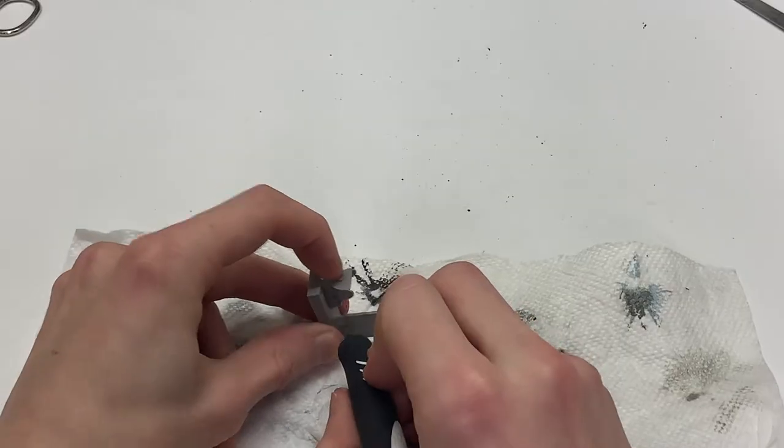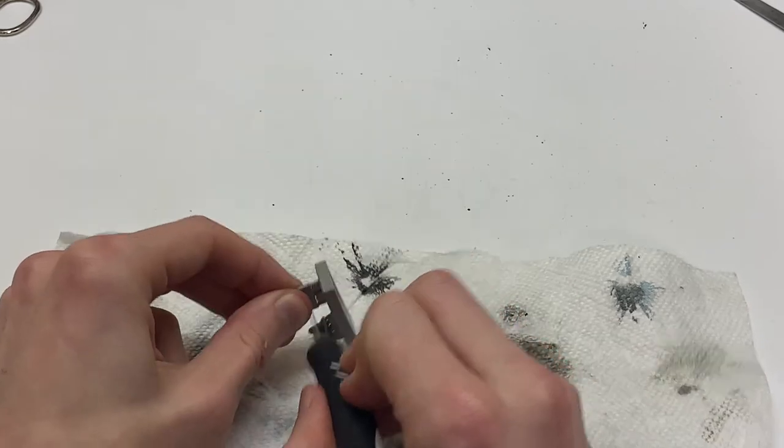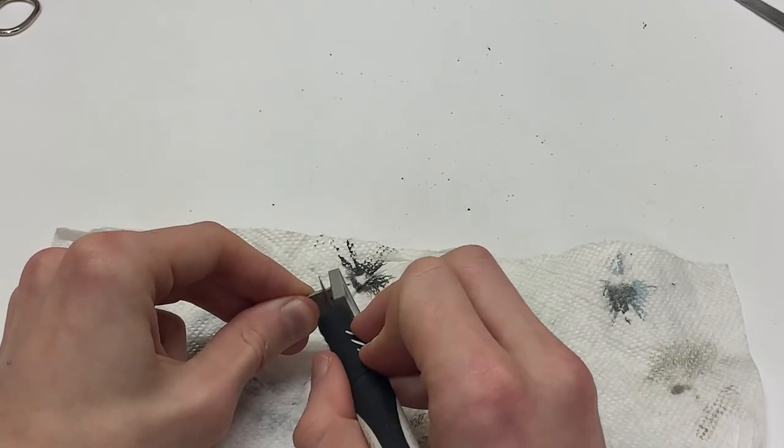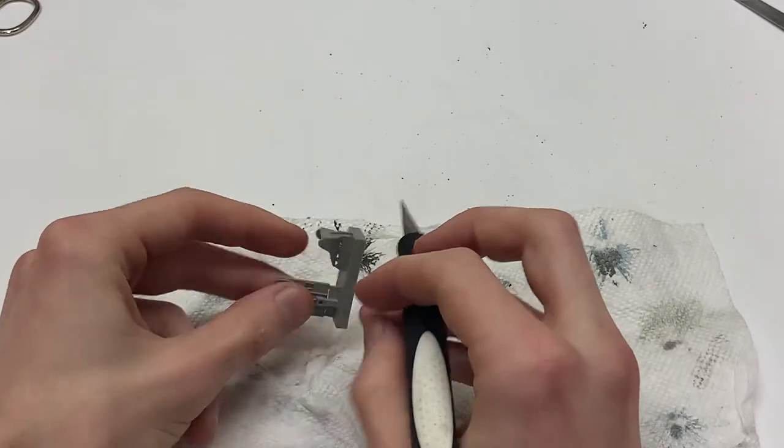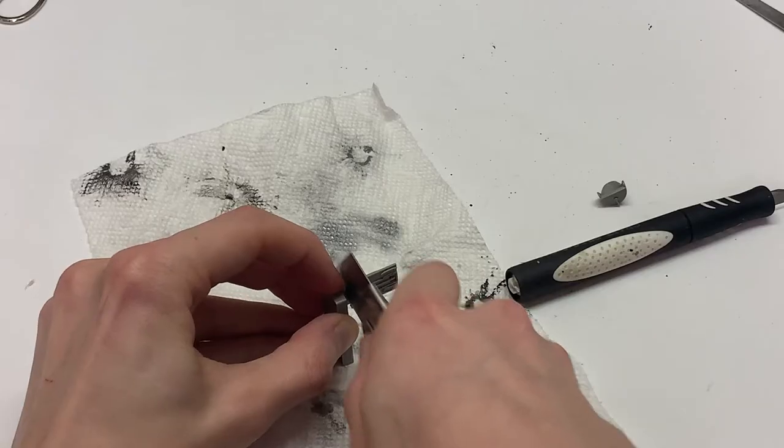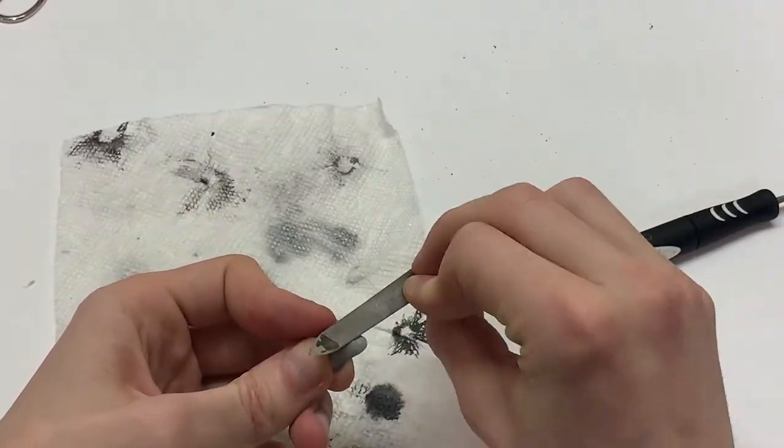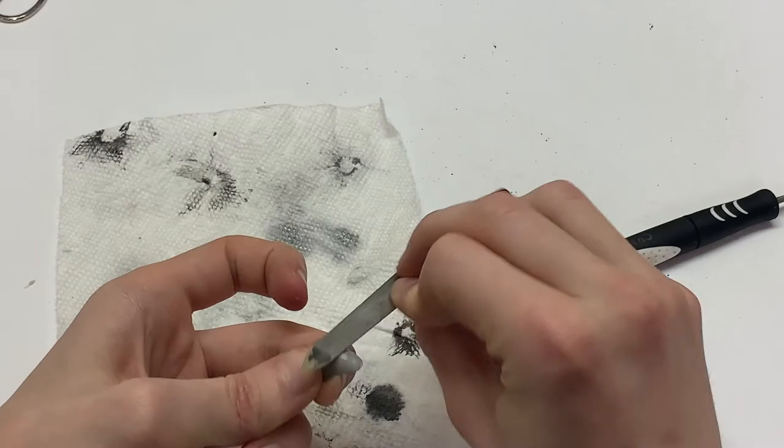First things first, the resin dust is toxic. So whenever you're dealing with it, sanding it, cutting it off, make sure to wear some sort of respirator to protect you from inhaling those particles. And lay down something that can catch all the particles that fly off as you're cleaning those parts.